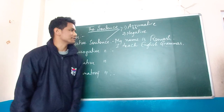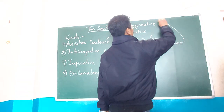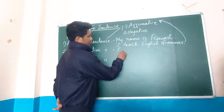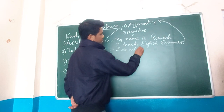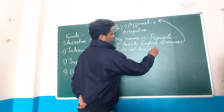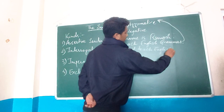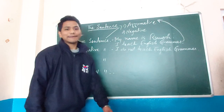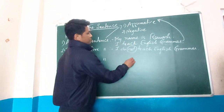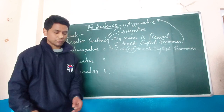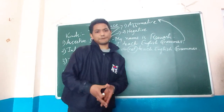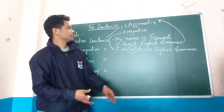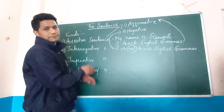If you look at the sentence 'I teach English grammar,' that is your affirmative sentence. But if I write 'I do not teach English grammar,' this is your negative sentence. Whenever there is negation — 'no' or 'not' — that becomes a negative sentence. Otherwise it is called an affirmative sentence. But both are assertive sentences as a whole.